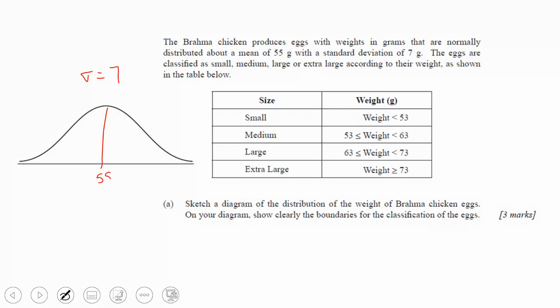Then they tell you the different ranges of eggs. So small eggs are 0 to 53. Medium are 53 to 63, so this is medium. Large are 63 to 73, and then extra large are 73 or more.